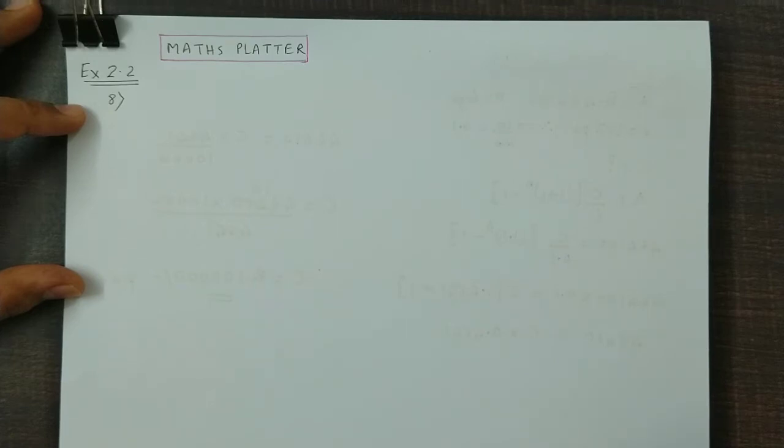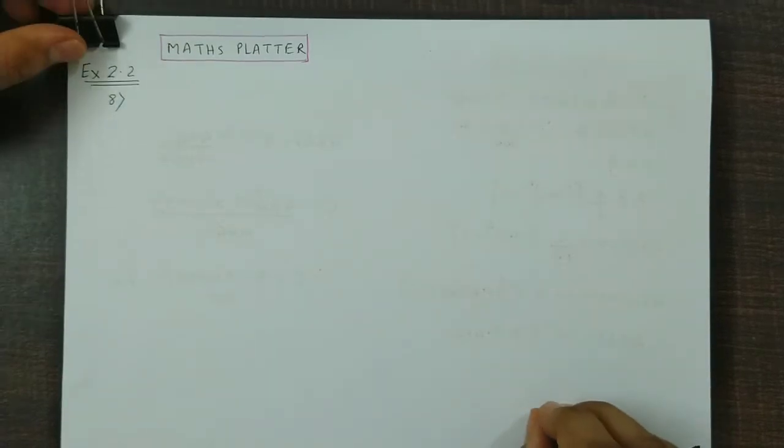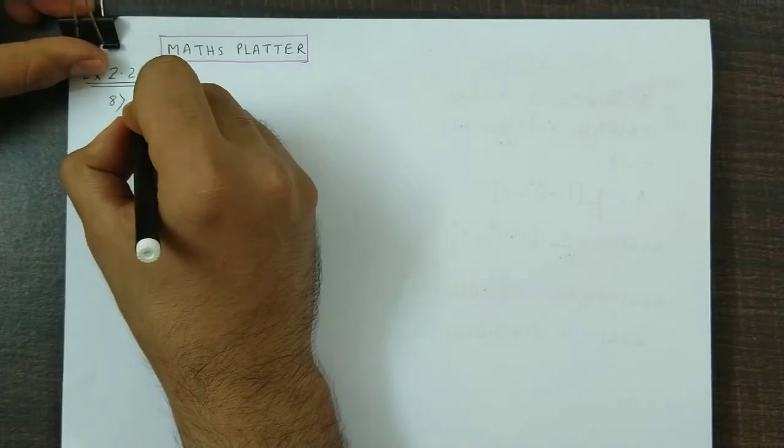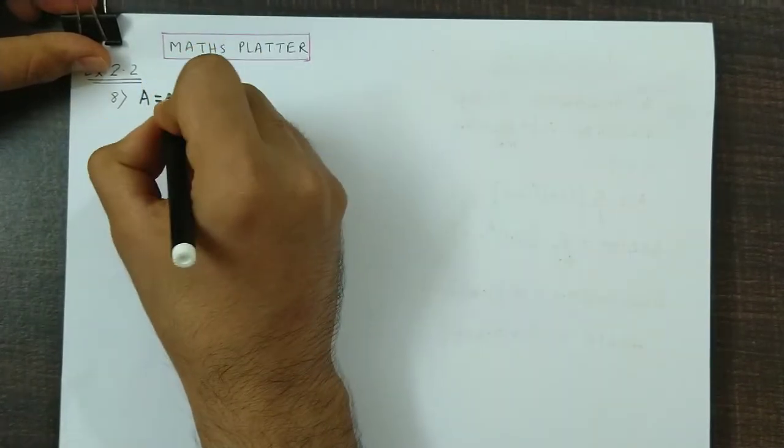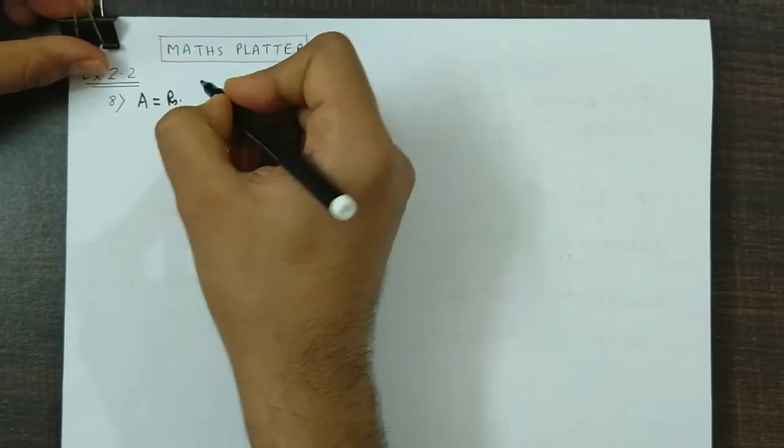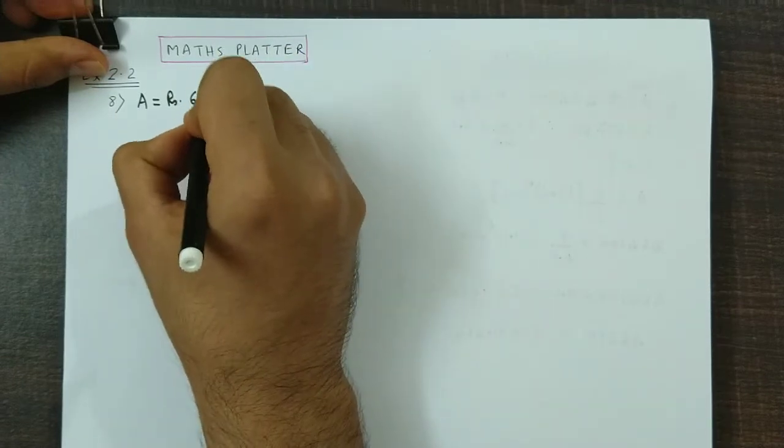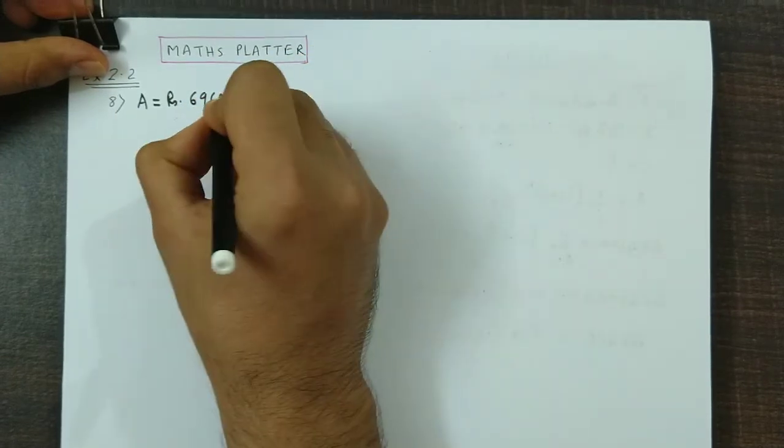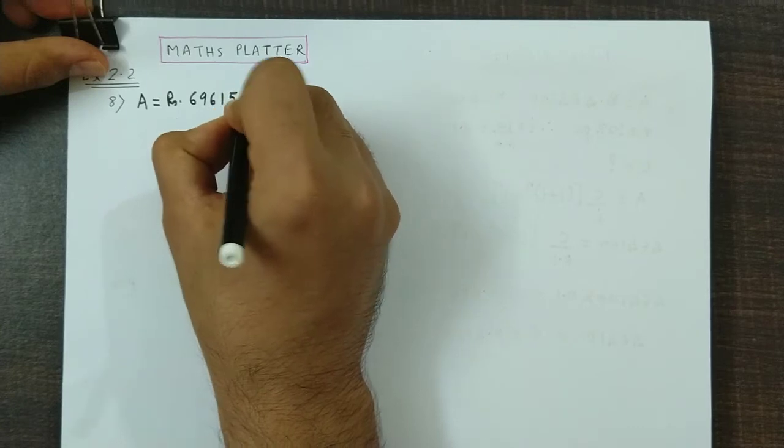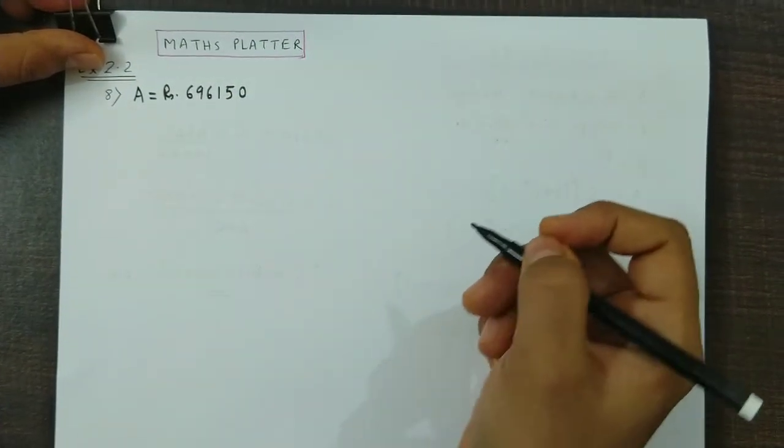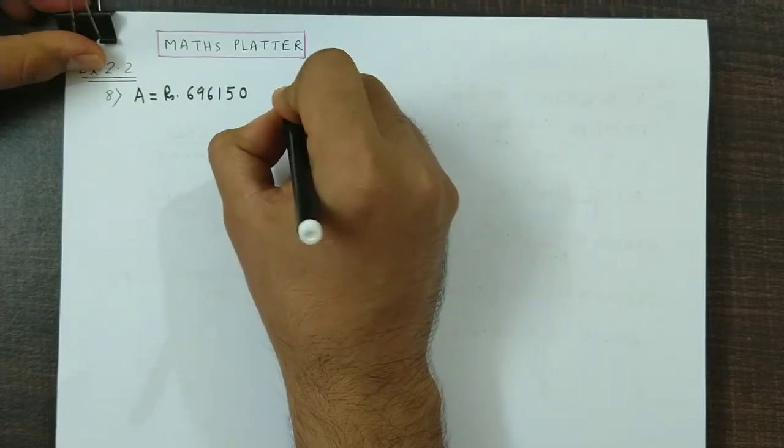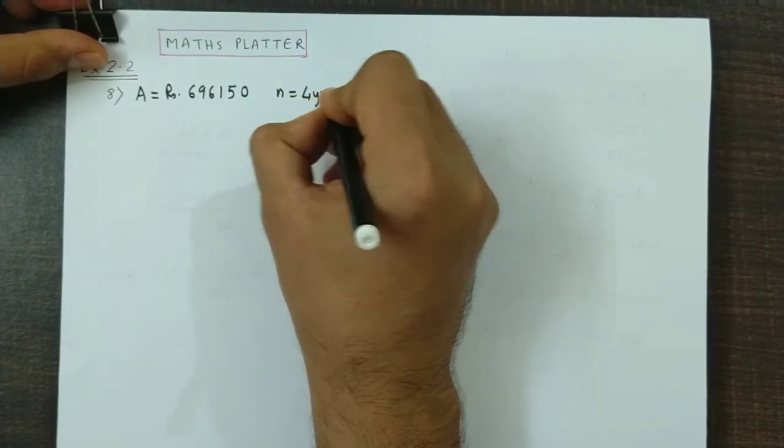What amount should he invest every year? So, his money accumulates at the time of retirement, Rs. 6,96,150. This amount should happen after 4 years. So, n is 4 years.